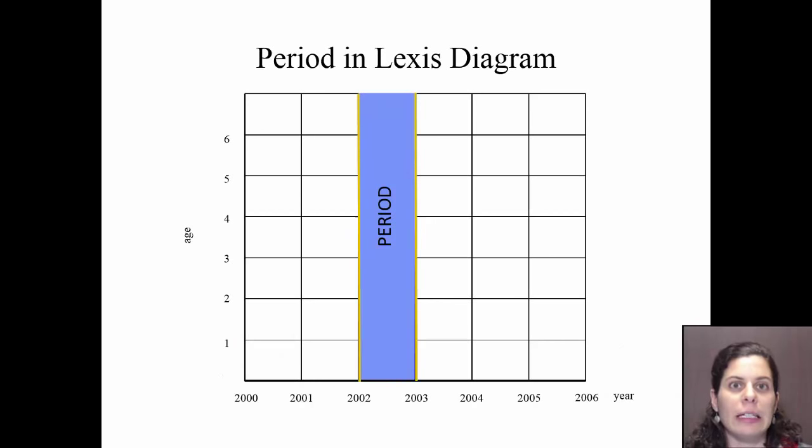Period with a narrow vertical strip. We count people, for example, from 0 to 1 years and continue until the end of the ages, constructed as in the age cohort.